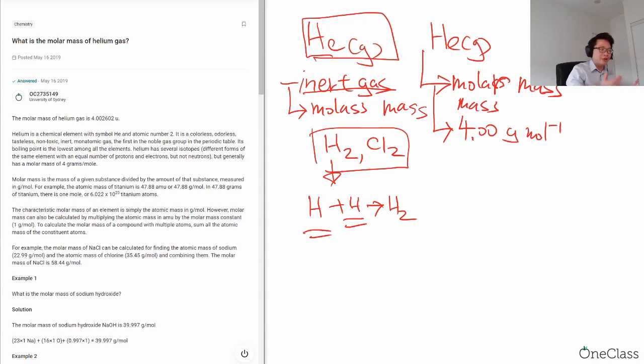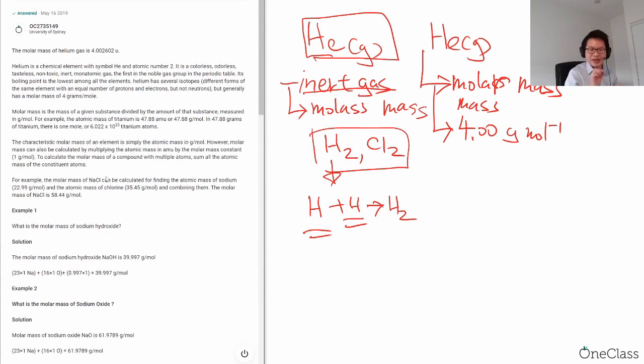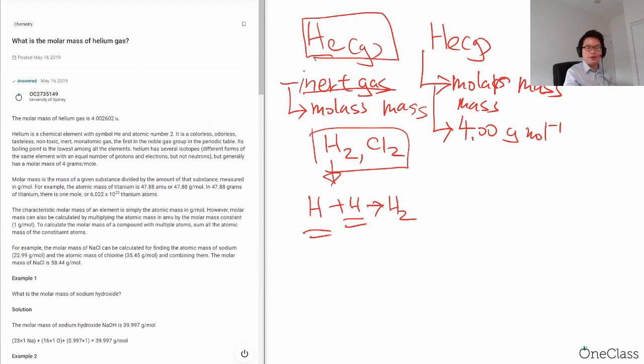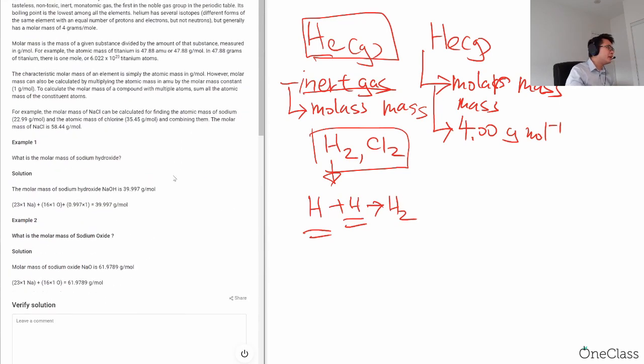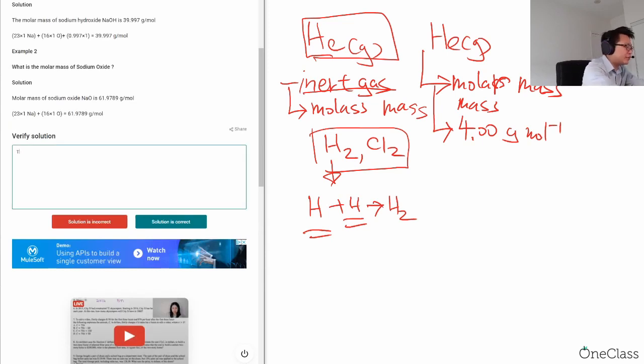So the correct answer should be 4.002602, depending on what value you find, but the unit must be grams per mole. We are looking at one mole of helium gas, and in that helium gas we only have atoms, not diatomic molecules. Helium is stable, so we're looking at one mole of helium atoms and the mass will be 4.0 grams per mole.